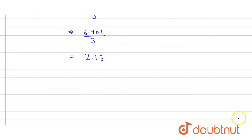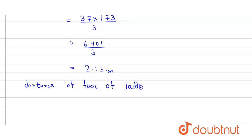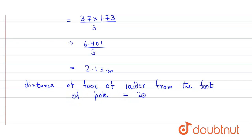The unit is meters, so we get our answer in meters. The distance of the foot of the ladder from the foot of the pole is equal to 2.13 meters.